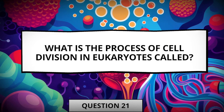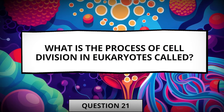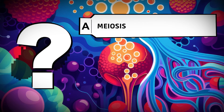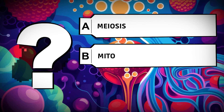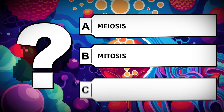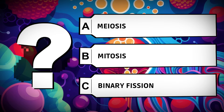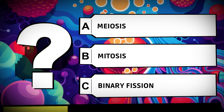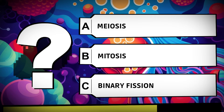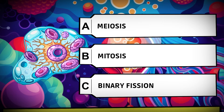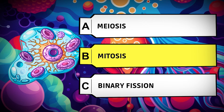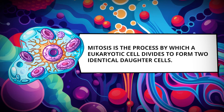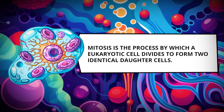What is the process of cell division in eukaryotes called? Meiosis, mitosis, binary fission. Mitosis is the process by which a eukaryotic cell divides to form two identical daughter cells.